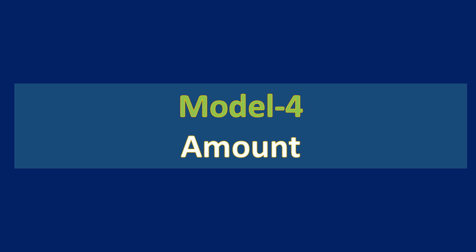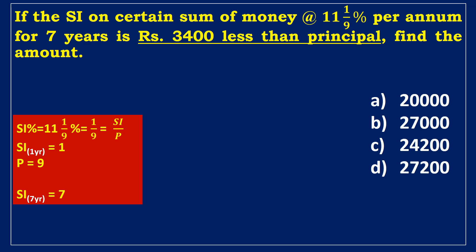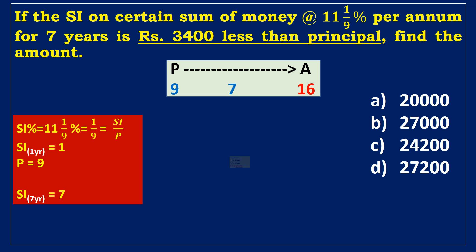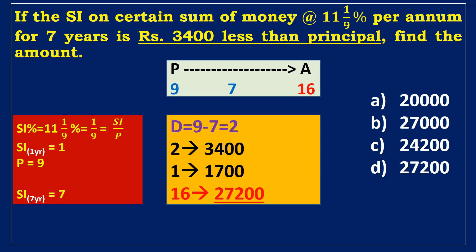Model 4: Find the amount when time and interest rate are given. The simple interest and principal at 11 1/9% per annum for 7 years can be calculated using percentage-to-fraction conversion: 11 1/9% = 1/9, meaning SI per annum is 1 and principal is 9. For 7 years, SI = 1 × 7 = 7. So Amount = Principal + SI = 9 + 7 = 16. Given that the difference between principal and SI is 2, and this equals 3400 rupees, the value of 16 units is 27,200 rupees, which is the total amount.